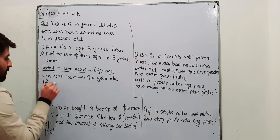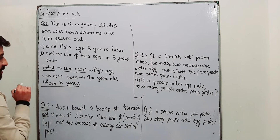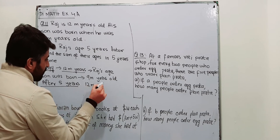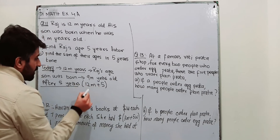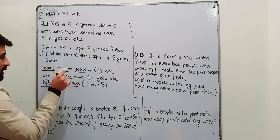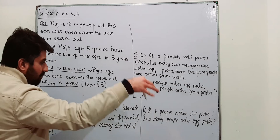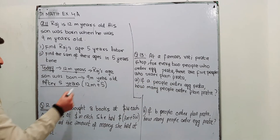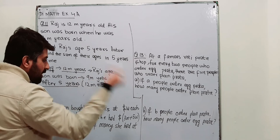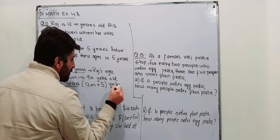After 5 years, you will add 5 to 12m. Today he is 12m years old; after 5 years he will be 5 years older. So you will add 5 to 12m, and his age after 5 years will be 12m plus 5 years.